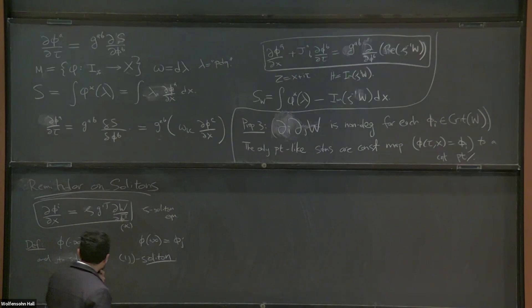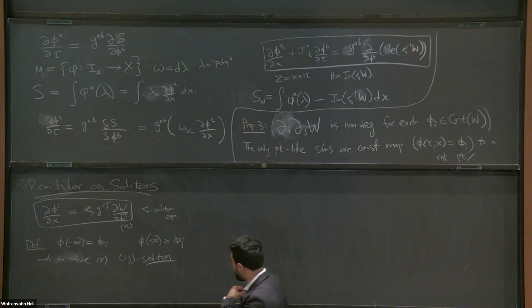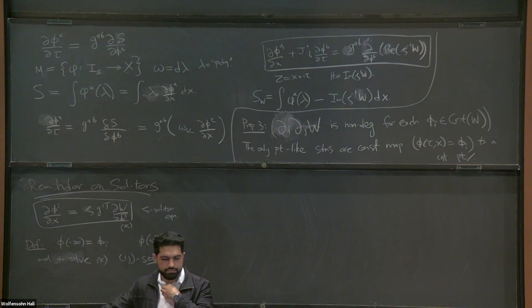There's bad news: if I want to solve this equation for arbitrary zeta, there are no solutions. If I keep zeta generic, there are no solutions with these boundary conditions. The reason follows from the holomorphicity of W.